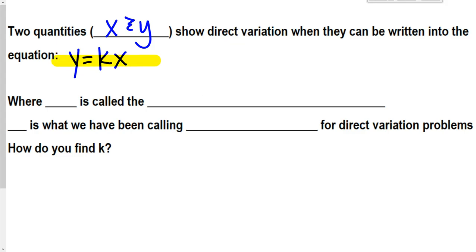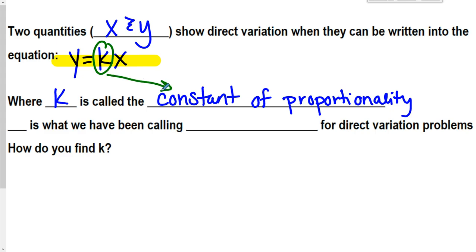And where k, that letter k, it's called the constant of proportionality. So this k right here is the constant of proportionality. k is kind of what we have been calling unit rate. So for a direct variation problem, when I've asked you to find a unit rate, what you're doing right there is you're actually finding the constant of proportionality. We just haven't called it that.